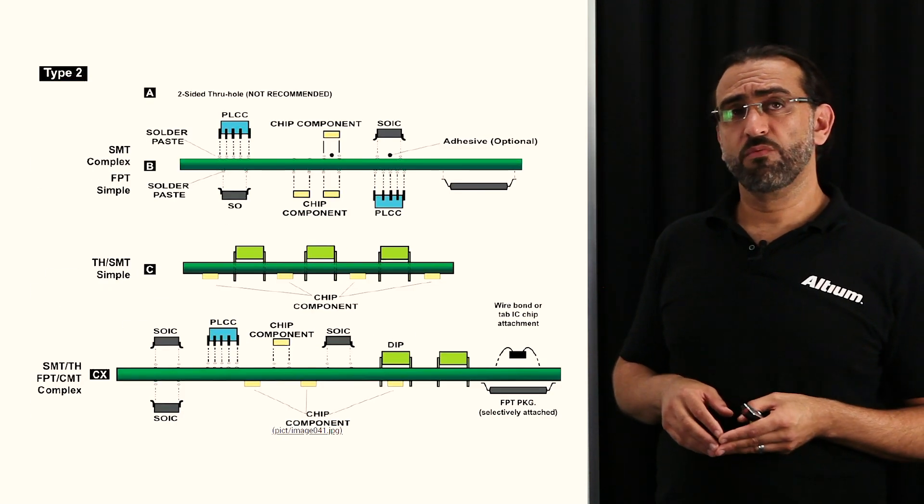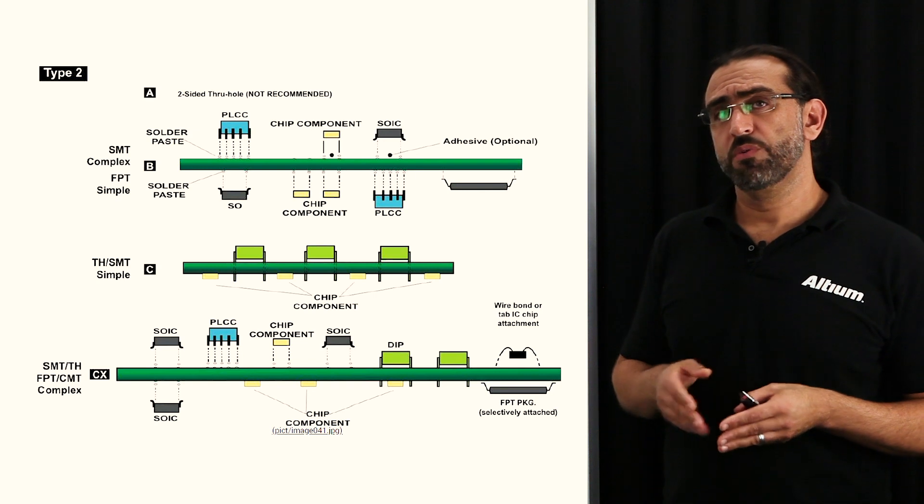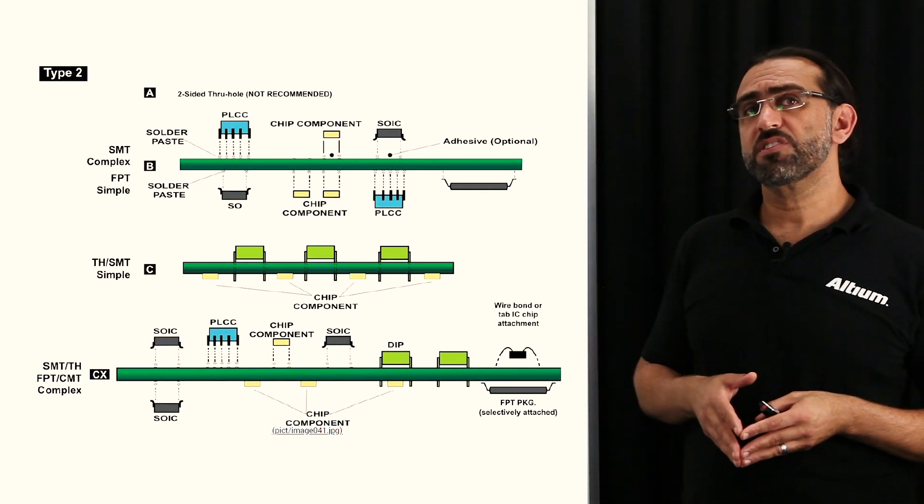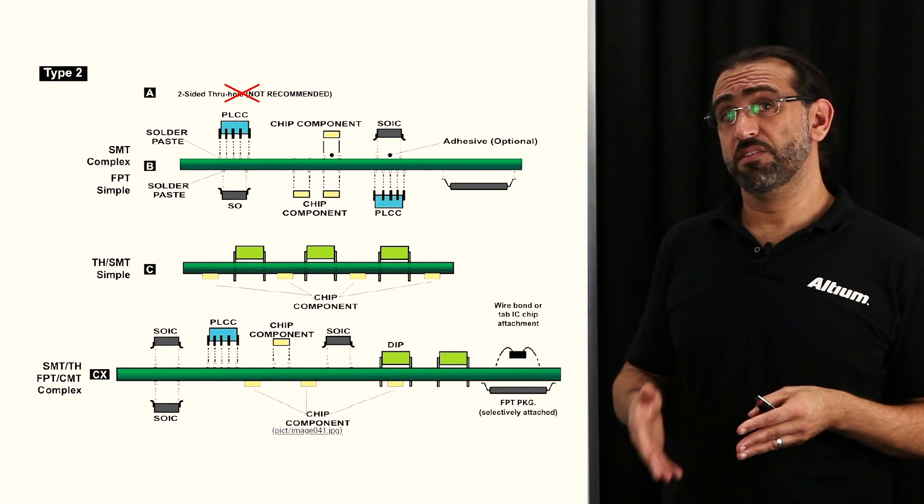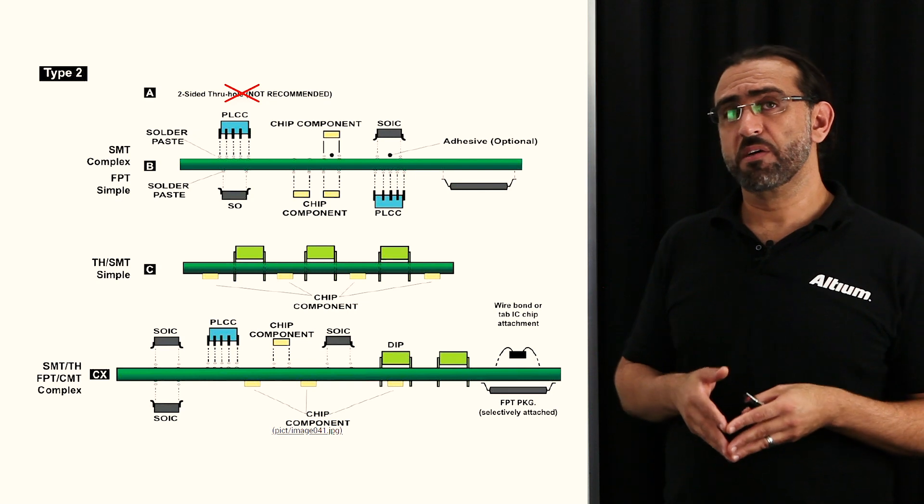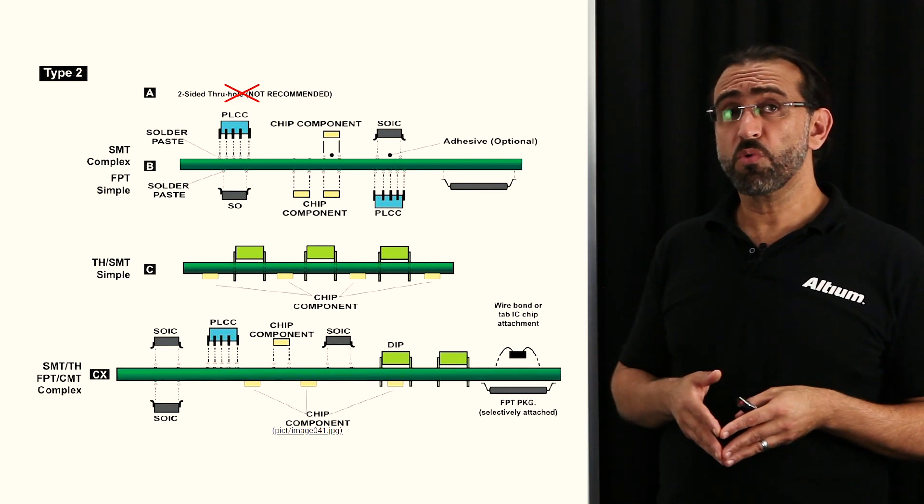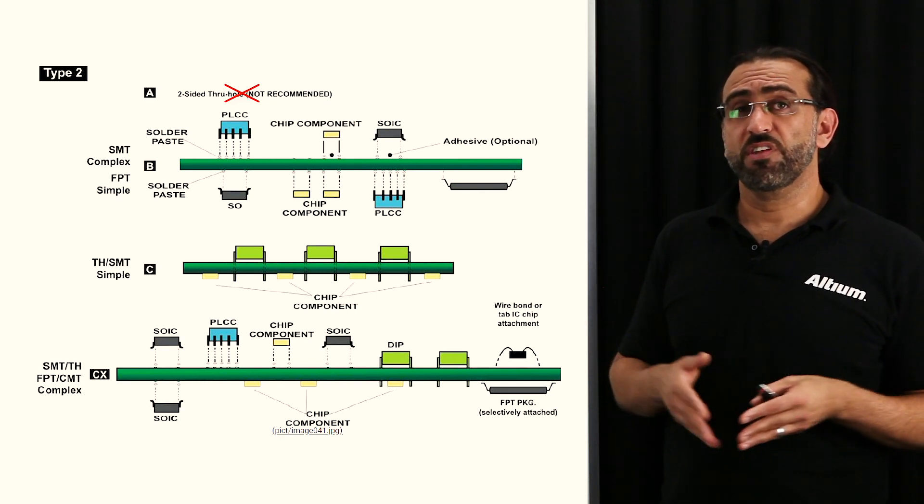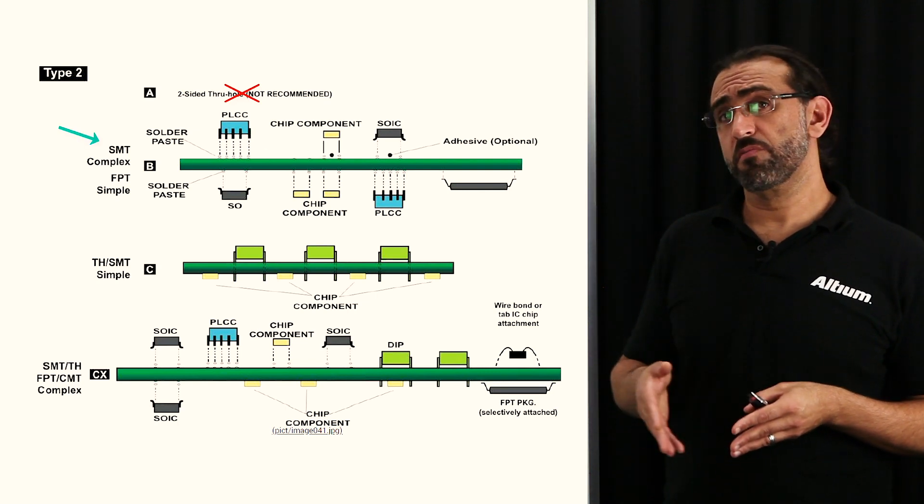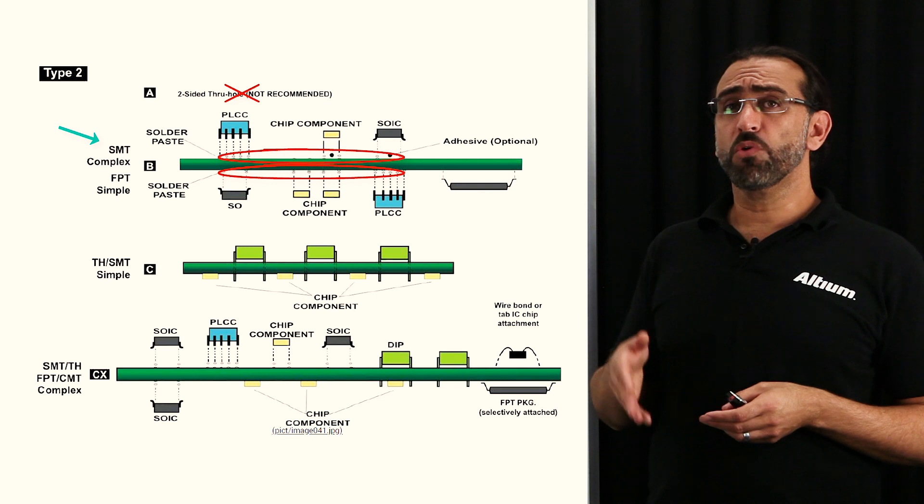And here we have what we're referring to as type 2, with components installed on both sides of the PCB. As you can see, the image is not showing, we don't have an image for example, the one labeled A, simply because we never recommend a two-sided through hole board. It's just never recommended. And the next one, labeled B, is a PCB with surface mount on both sides of the board.